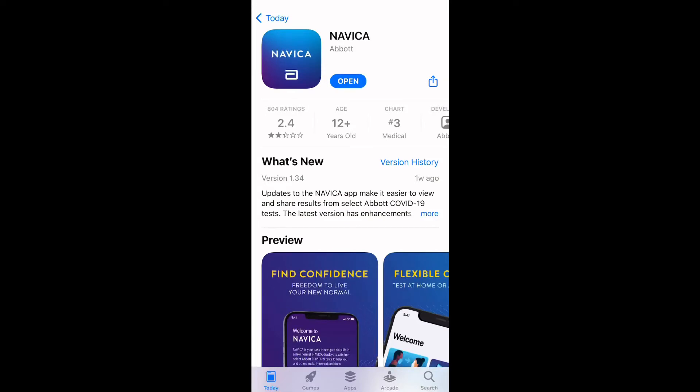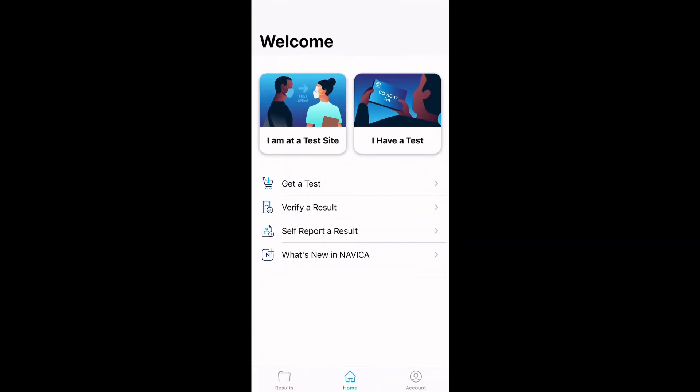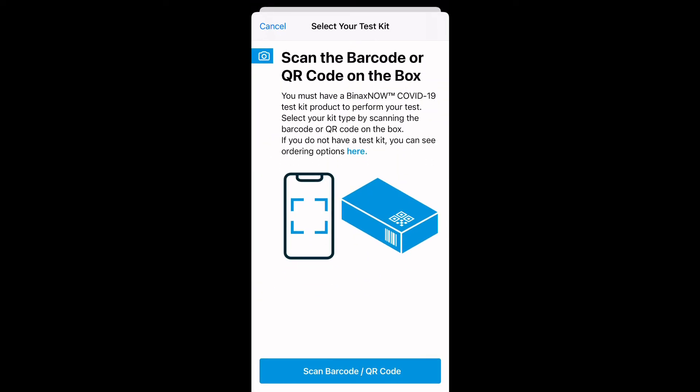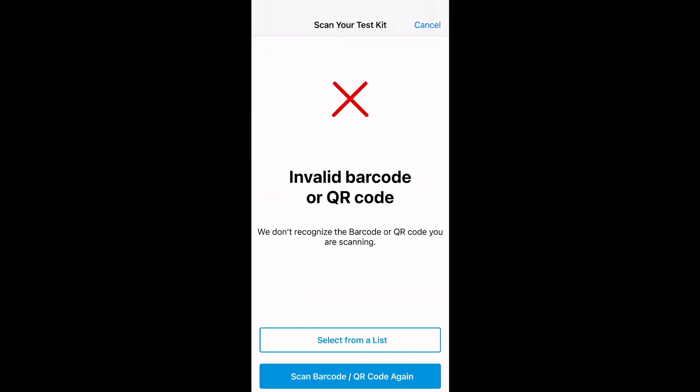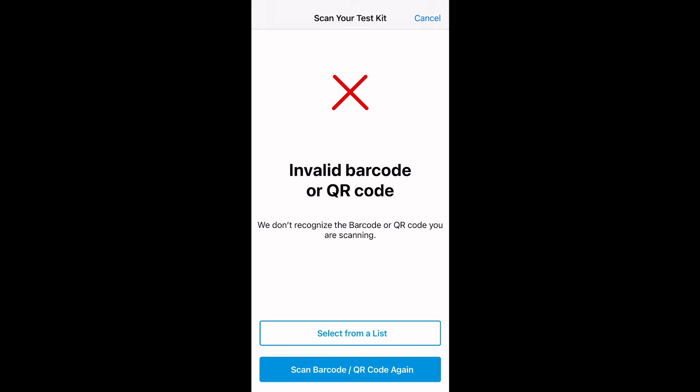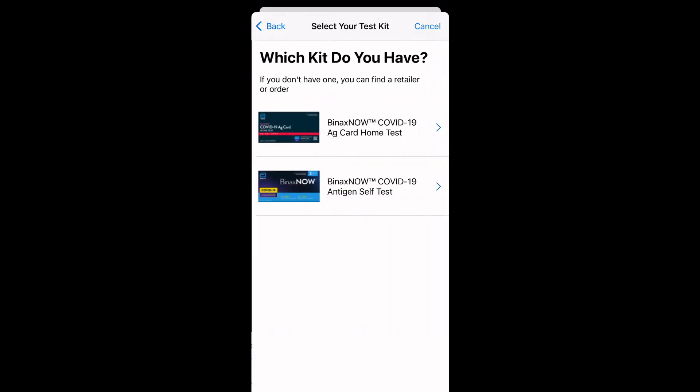At this point, you can have the patient record his or her results on the Navica Abbott app and just follow the prompts. He didn't have the box on this. You guys will have the box when you do it at home. Make sure you save that box and then scan the barcode on the side. And then it's going to ask you questions, and then you're going to scan the card itself. This is invalid because we don't have the box.